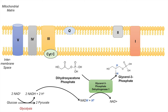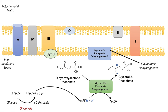Now that we have glycerol-3-phosphate with those 2 protons and their associated electrons, glycerol-3-phosphate can be acted on by the enzyme glycerol-3-phosphate dehydrogenase 2, which is located on the outside of the mitochondrial inner membrane. Glycerol-3-phosphate dehydrogenase 2 is also known as flavoprotein dehydrogenase and utilizes FAD as a cofactor. Once it acts on glycerol-3-phosphate, we recycle glycerol-3-phosphate back into dihydroxyacetone phosphate, and in the process FAD gets reduced to FADH2, so those 2 protons and 2 electrons are now on the FADH2.